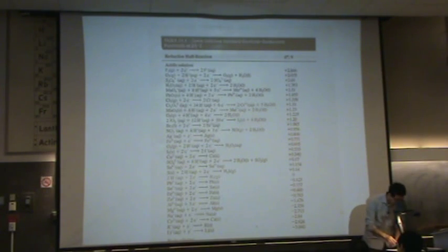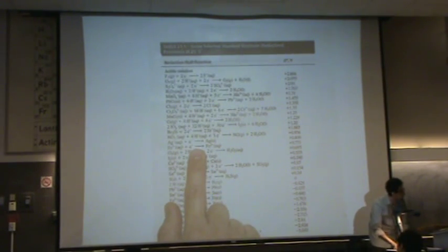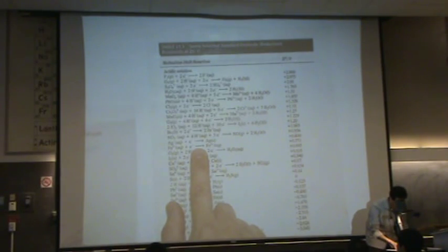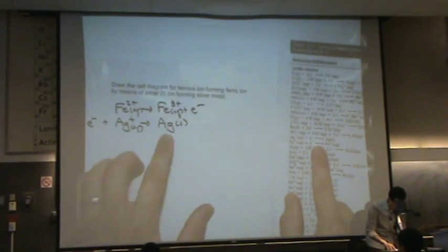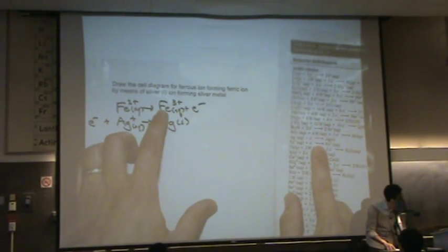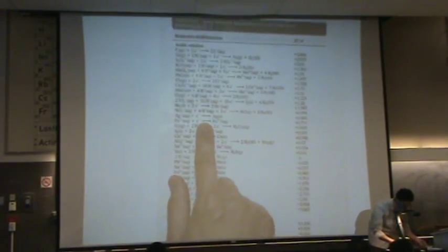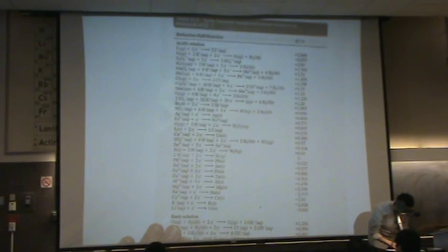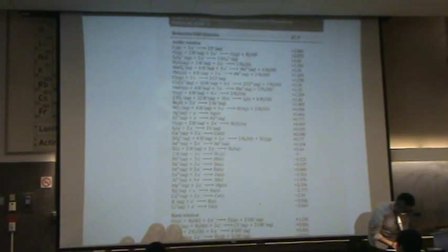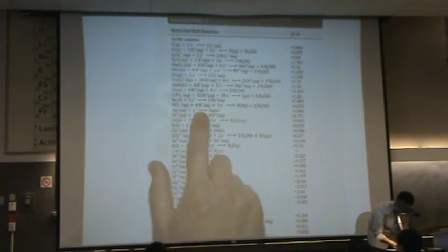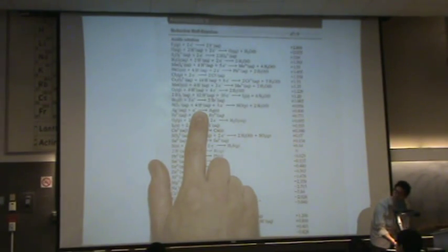So for example, that iron one, let's see, here it is right there. It's written, remember, as reduction. In this case, remember it's oxidation, but that's okay. It gives you only the reduction. And then the other one I think is here also, the silver one. We'll see. Oh, right above it. There we go. Boom. Okay?